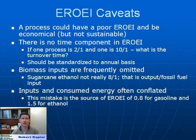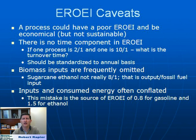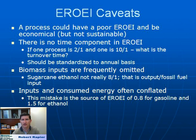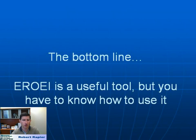The last caveat is that inputs and consumed energy are often conflated. Sometimes people claim the energy return for ethanol is better than for gasoline by comparing apples and oranges — treating the oil going into the refinery as consumed energy, so they're measuring efficiency for gasoline and energy return for ethanol. On an apples-to-apples basis, the energy return for gasoline is probably in the 6 to 8 to 1 range, while energy return for ethanol is around one and a half to two.